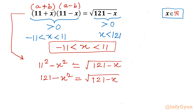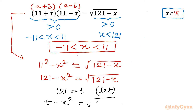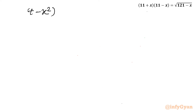Now I will apply a substitution: let t = 121. The equation becomes t − x² = √(t − x). Squaring both sides, we get (t − x²)² = t − x.